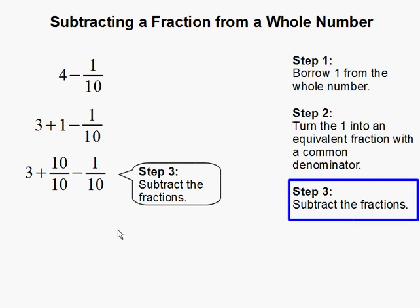Step 3: Subtract the fractions. So we only subtract the fraction part. So 10 over 10 subtract 1 over 10 gets us 9 over 10.